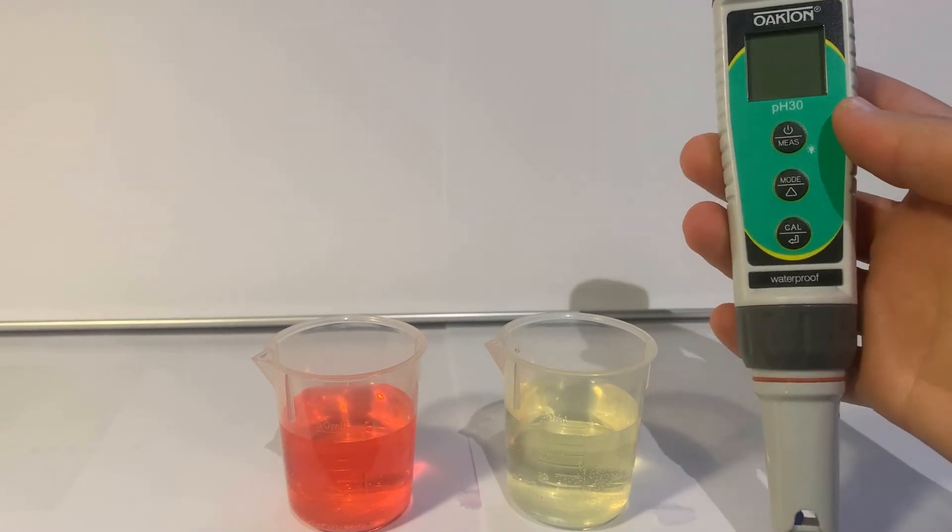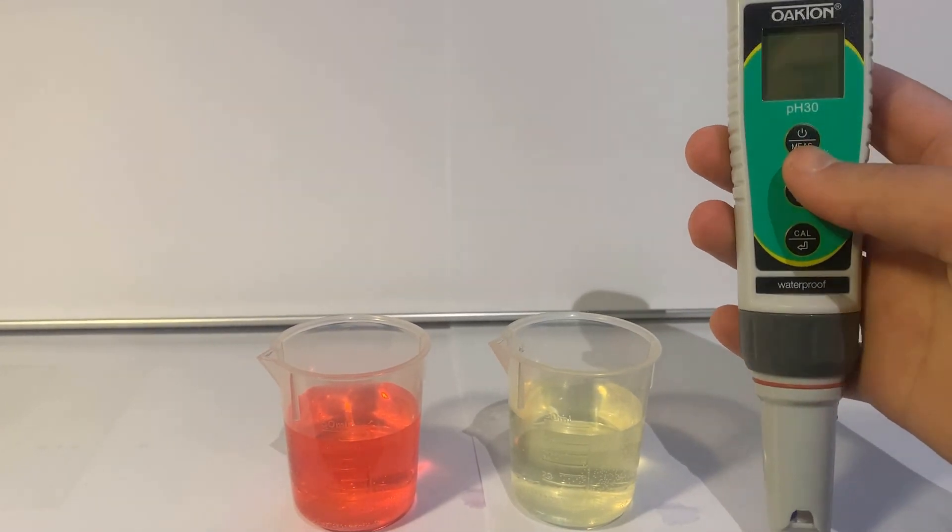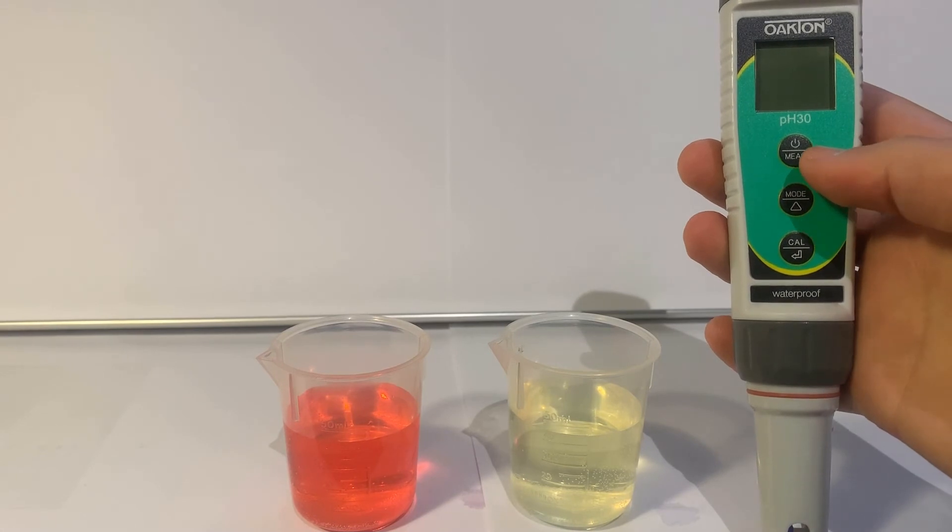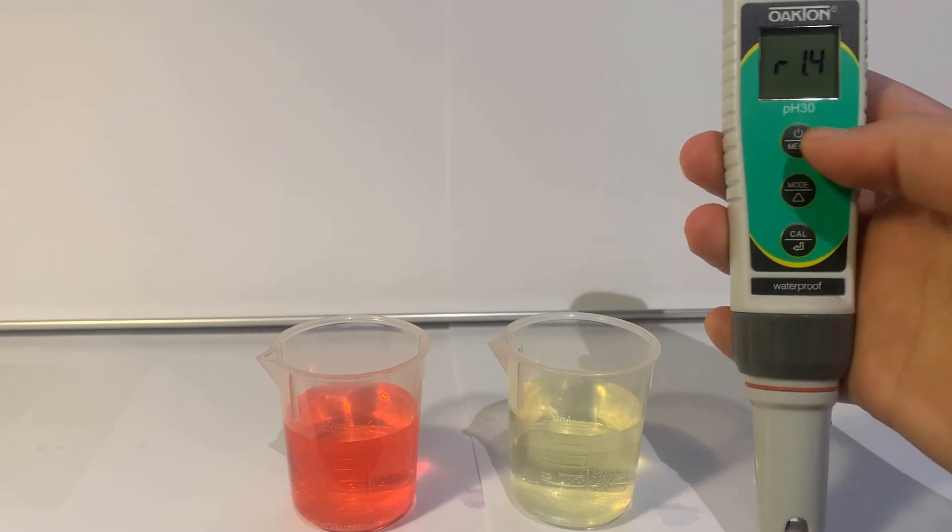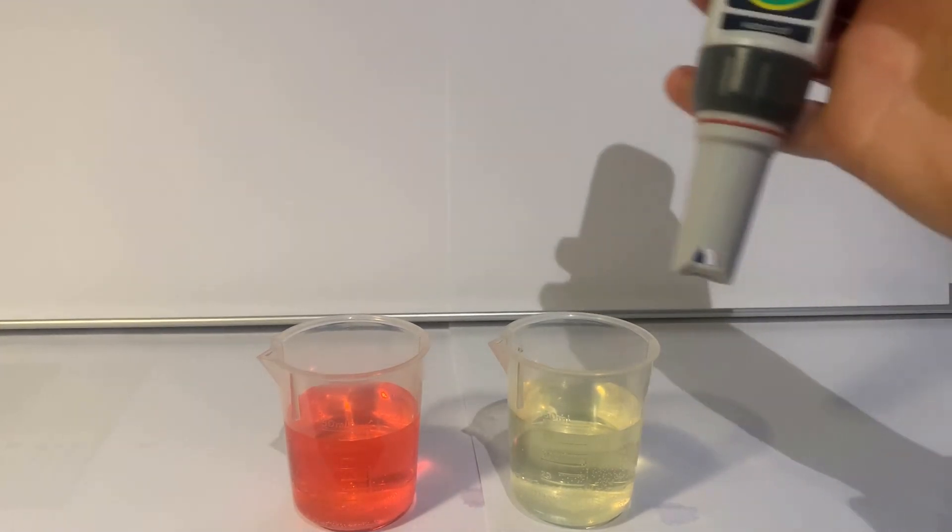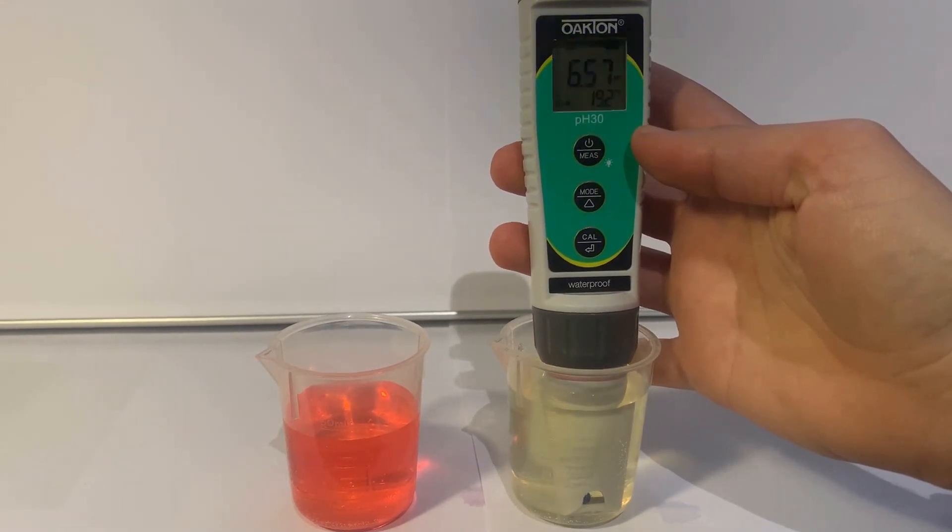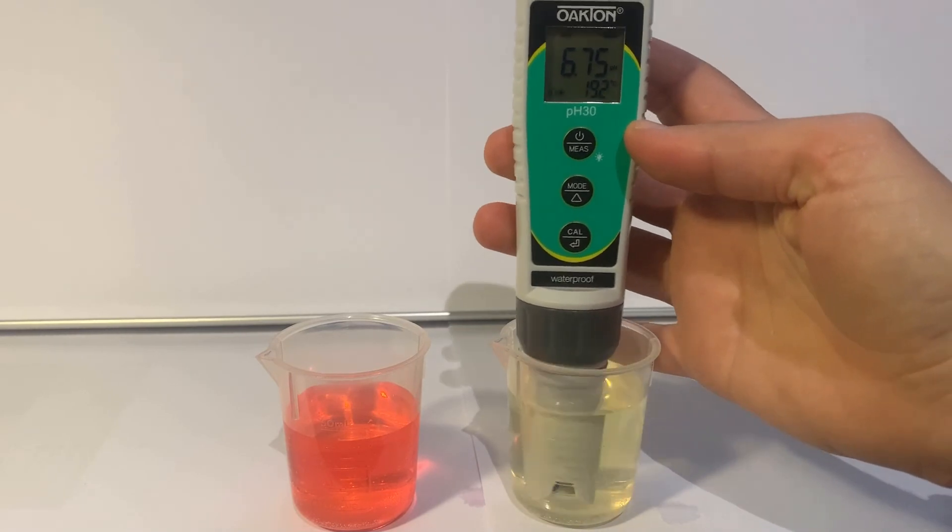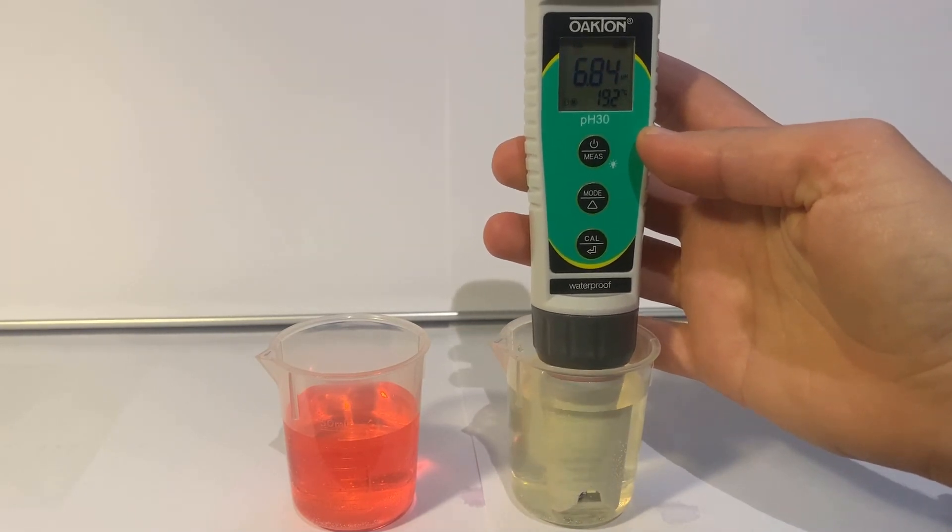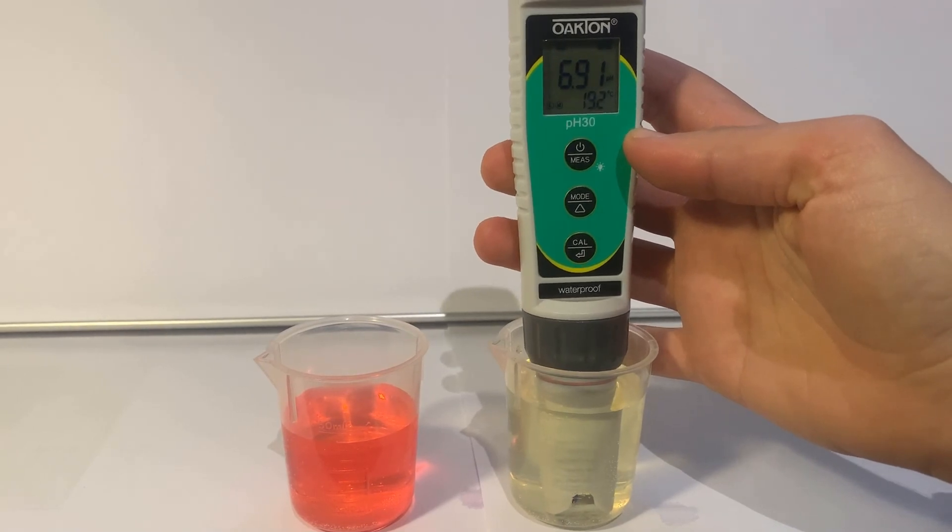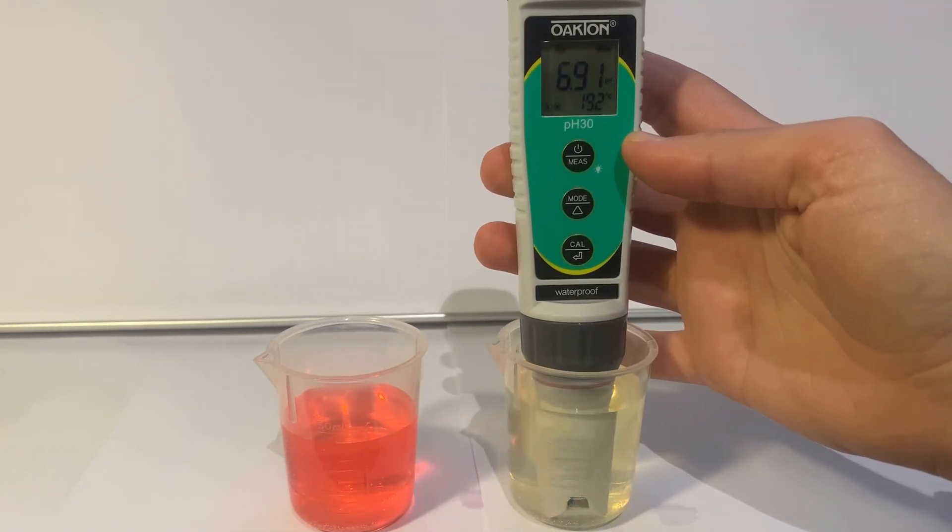When you return from the field, we want to ensure that no probe drift has occurred, so we'll check this by taking measurements of our calibration solutions. Turn on your meter and place it into Buffer 7 solution. We are not entering calibrations here, just taking a reading. Allow the stabilization icon to appear, then record your temperature and pH reading on your data sheet.